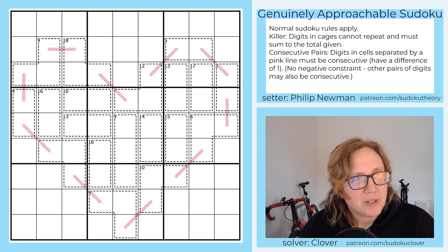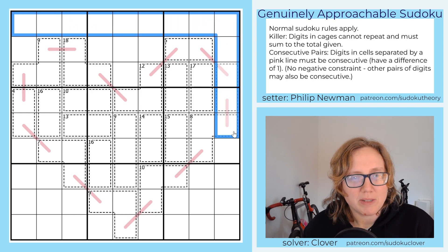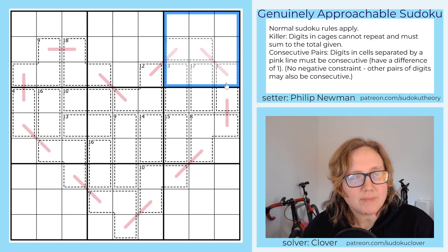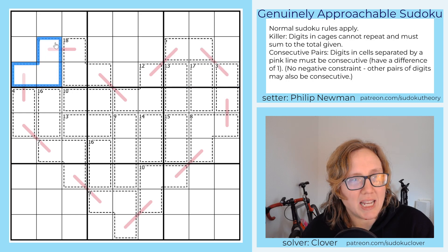So normal Sudoku rules. We're placing the digits one through nine exactly once each in each row, each column, and each three by three region. We also have some cages in the grid. Those are killer cages, and in those cages digits do not repeat, and the digits in a cage have to sum to the number given in the top left corner.